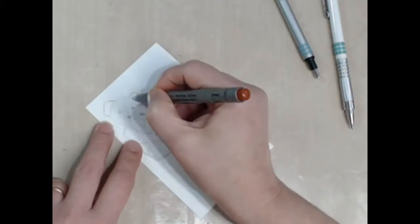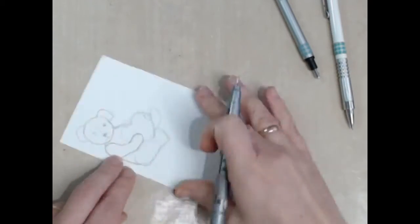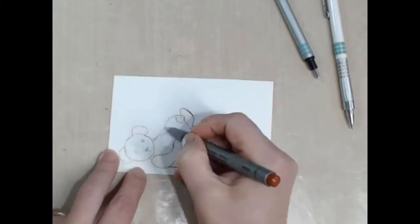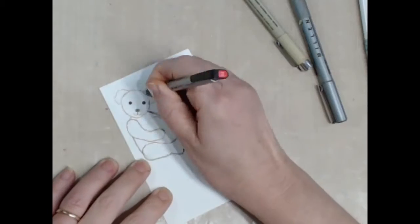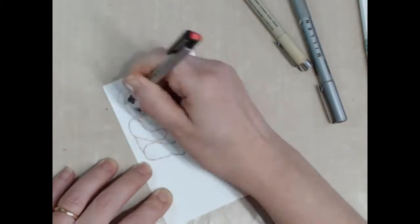I use my fine point waterproof pens in brown and black just to go around the outline of the teddy bear and fill in his little facial features before I erase my pencil lines.